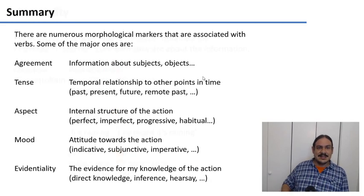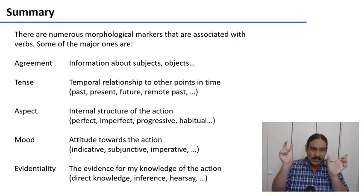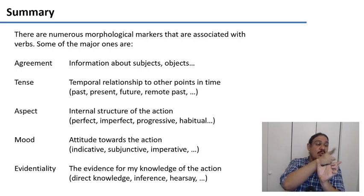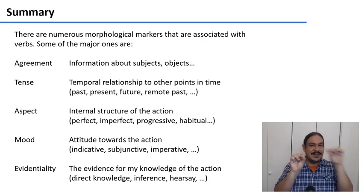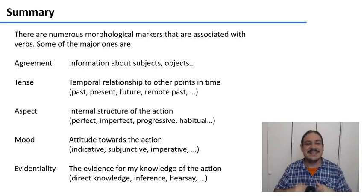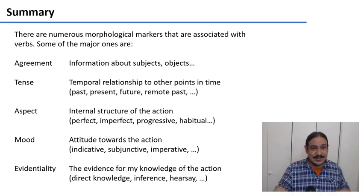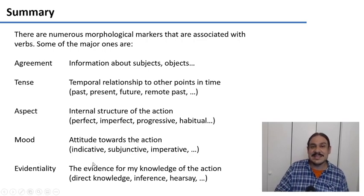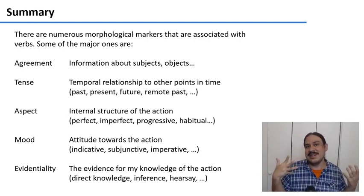So as you can see, verbs can do many things. There are many types of morphemes that can go with verbs: agreement — information about who is doing the action and who the action is being done to; tense — my relationship to the timeline; aspect — the structure in which the action is performed, whether it has a concrete ending, no concrete ending, or happens discretely many times as in the habitual; mood — my attitude towards the action, whether it did happen, might happen, or I'm telling you to do the thing; and evidentiality — how I know about something, whether I have direct evidence, I'm inferring, or I heard about it.